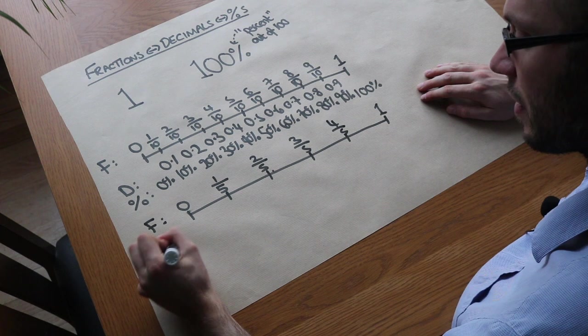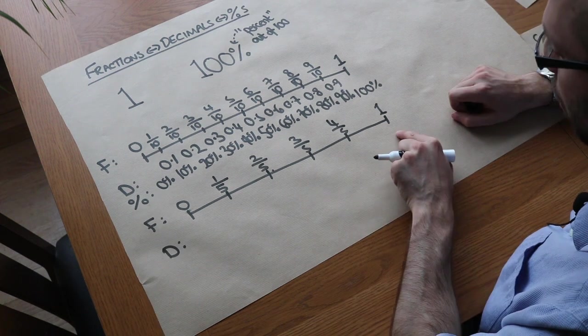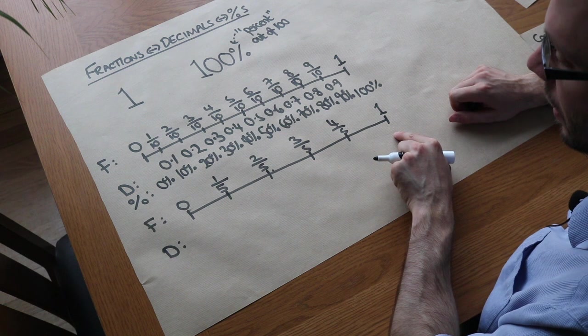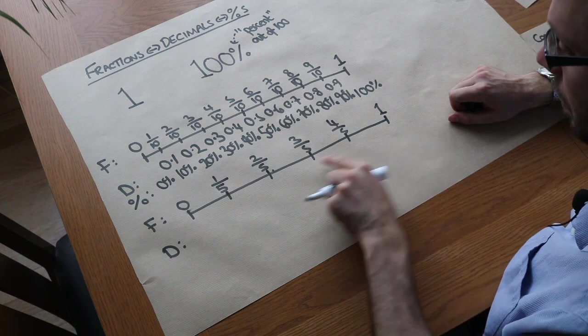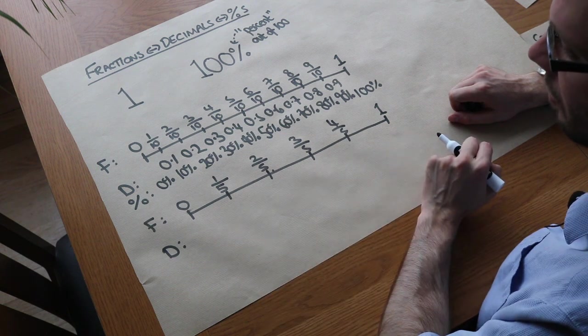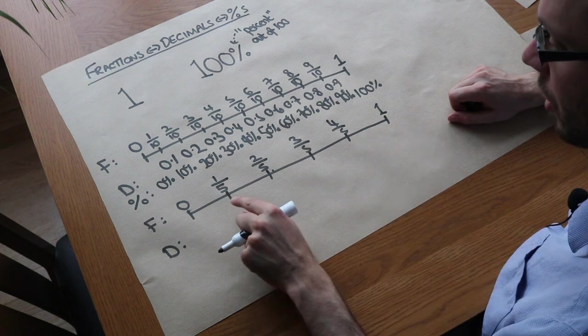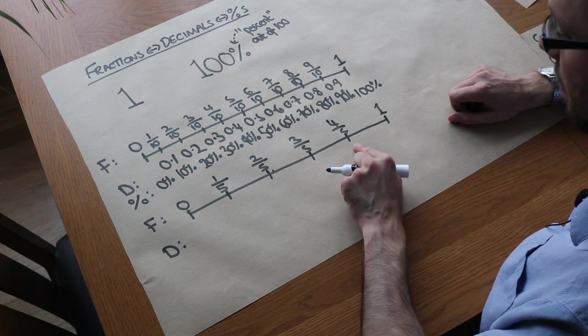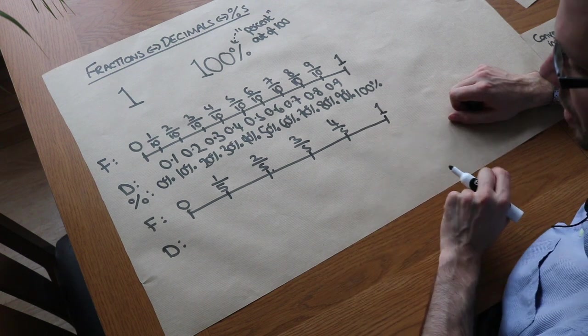What about as a decimal? Now if we had a whole, we could say again that that is 10 tenths. Now if we split that into 5, what's 10 divided by 5? Well, it's 2. So we have 2 tenths in each case. 2 tenths, 4 tenths, 6 tenths, 8 tenths, and then 10 tenths, which is a whole.